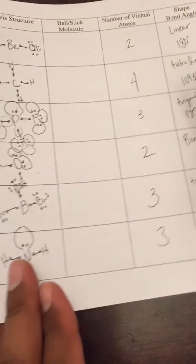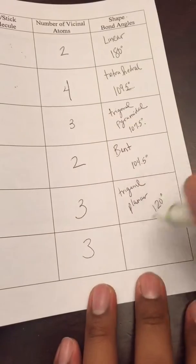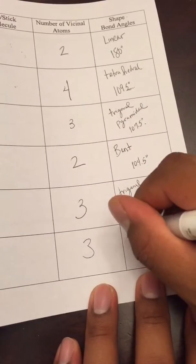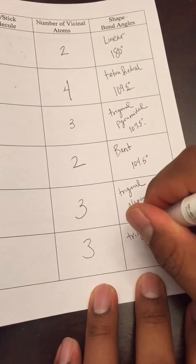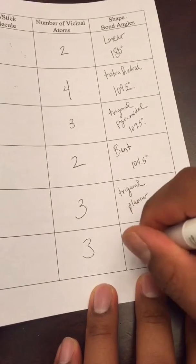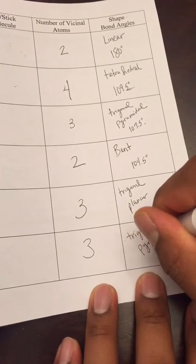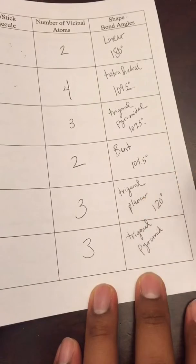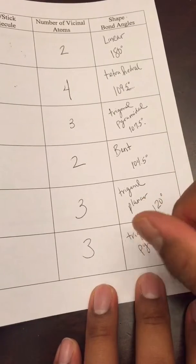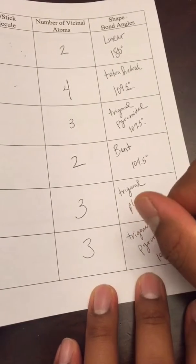Therefore, this one is actually trigonal - because it has three bonds - the only thing is that you're creating now a pyramid. At the base, the amount of degrees of the bond angle for this one will be 107.5.